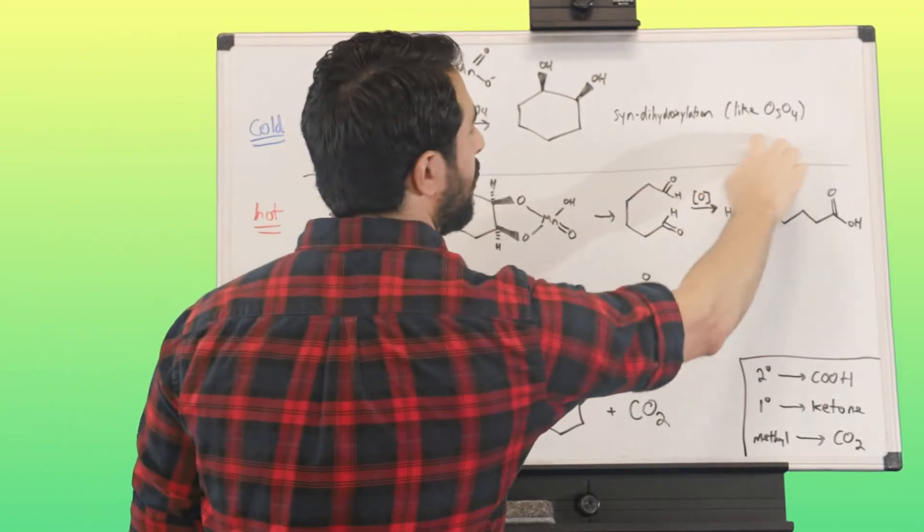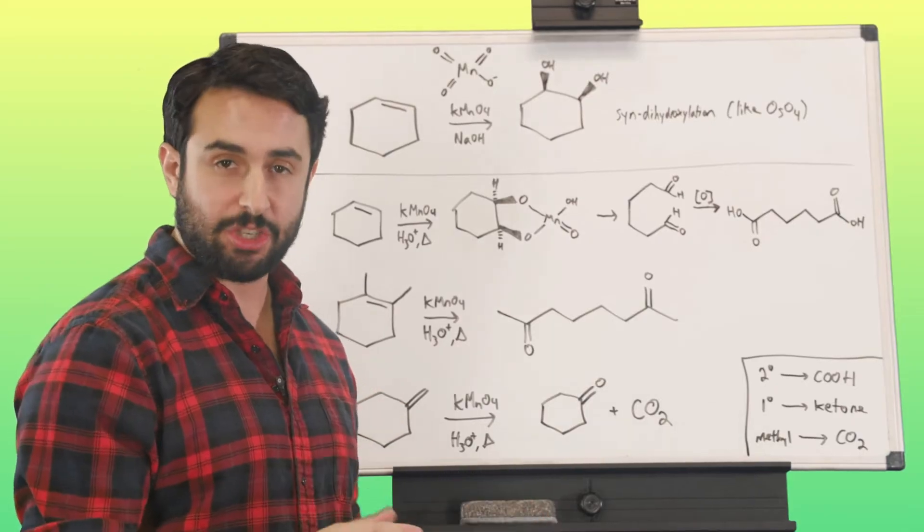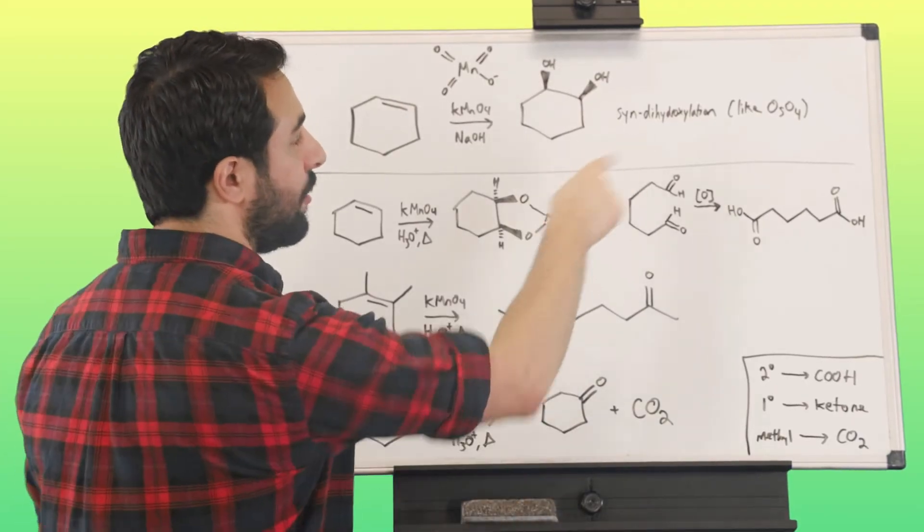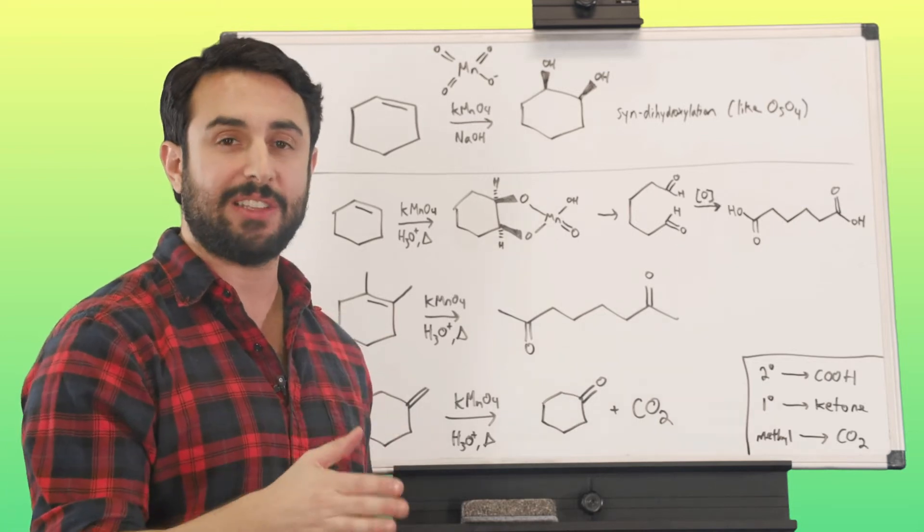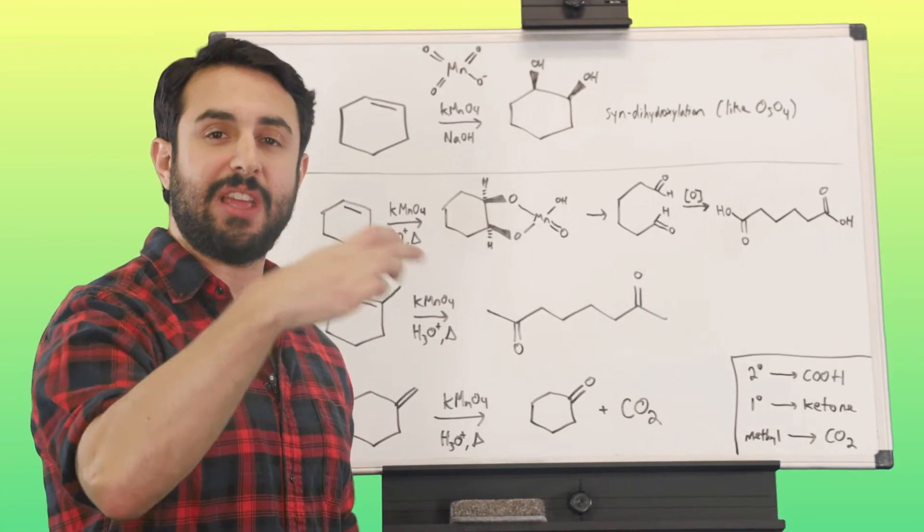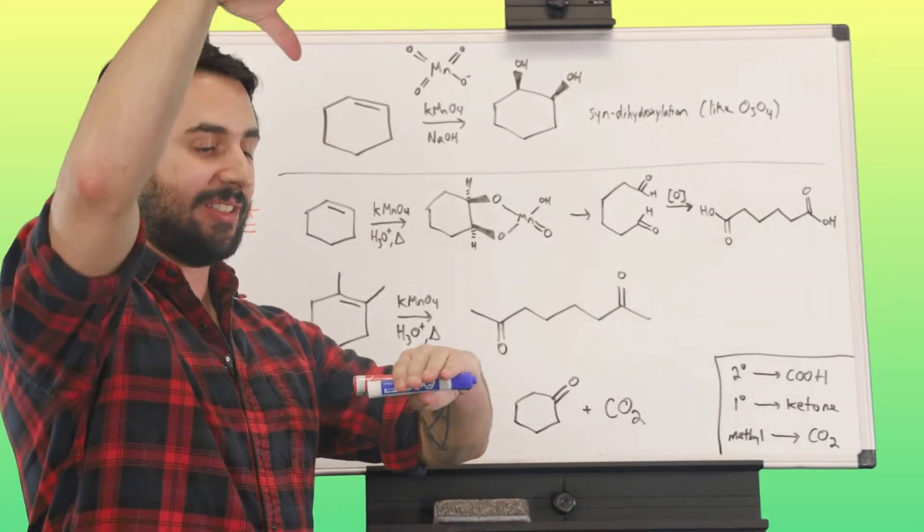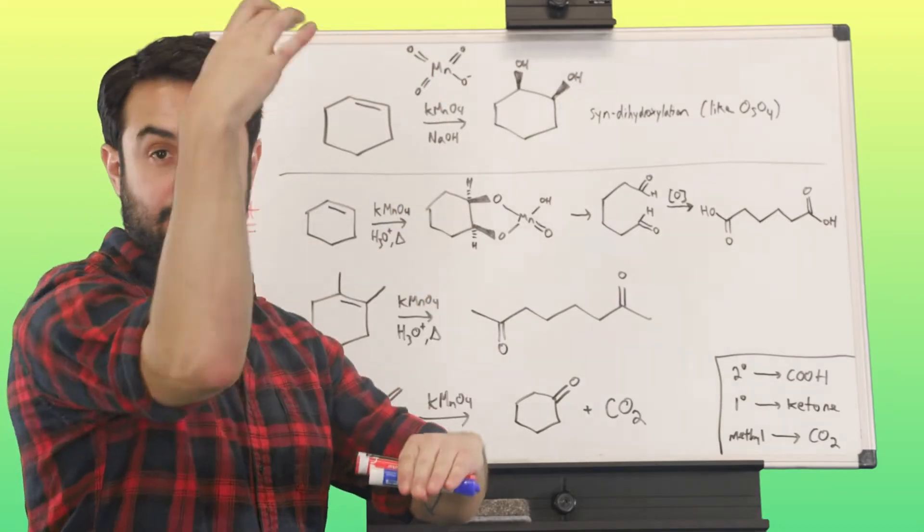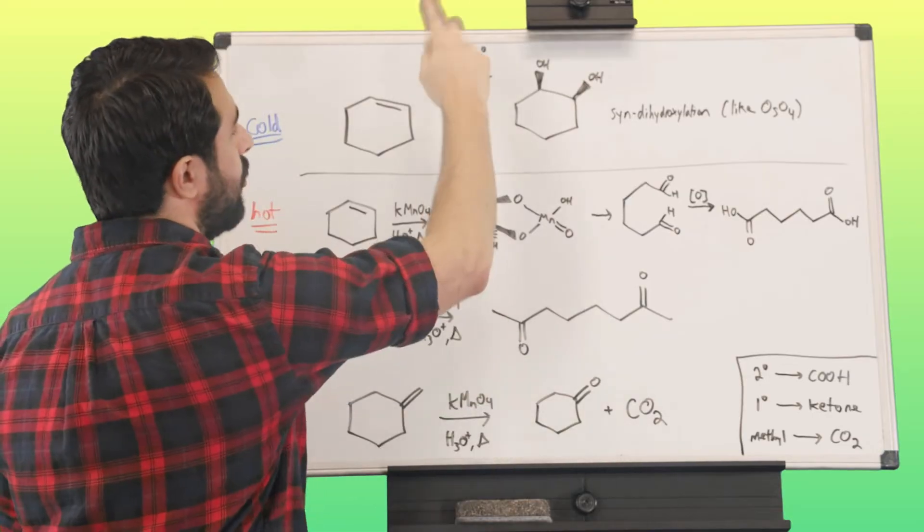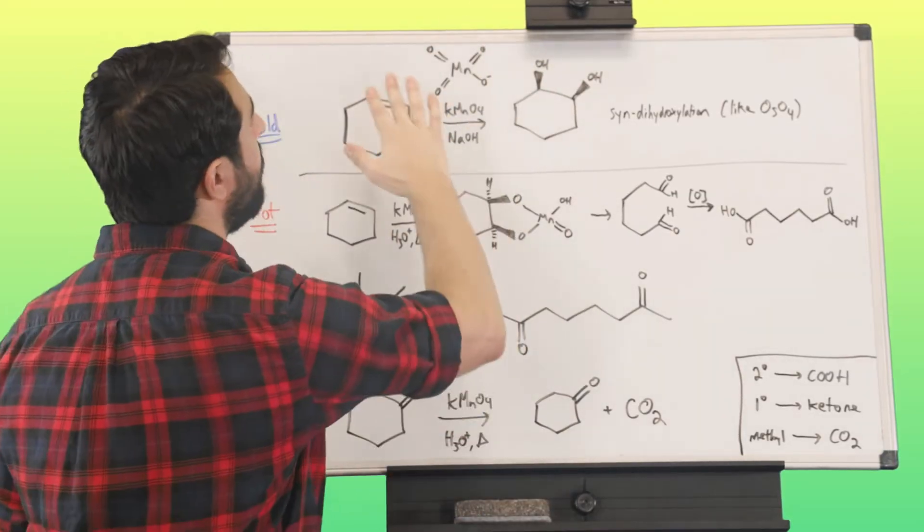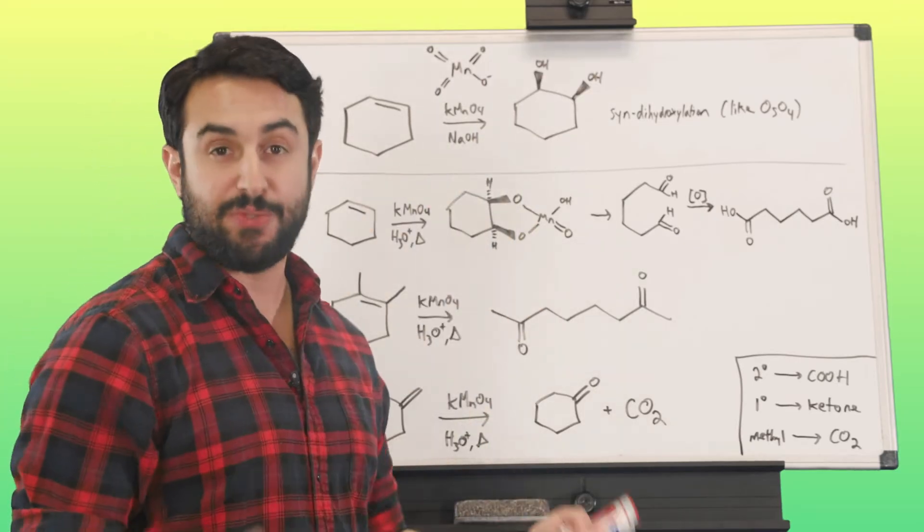It's actually very similar to the addition reaction we already know for syn dihydroxylation using osmium tetroxide, OSO4. The reason that's a syn dihydroxylation is because both oxygens being delivered to the molecule are coming from the same molecule. It has to lower down and deliver both oxygens. The permanganate ion is going to do exactly the same thing. We've got two oxygens being delivered to the molecule, giving us this vicinal diol.